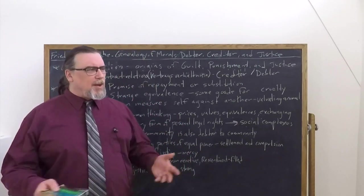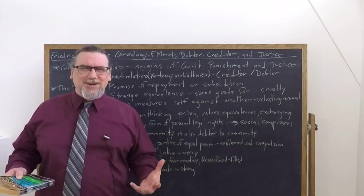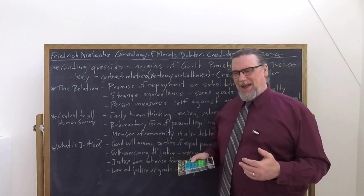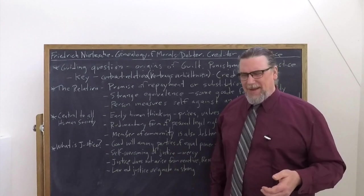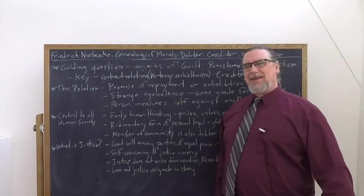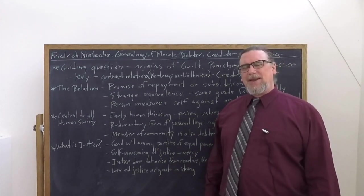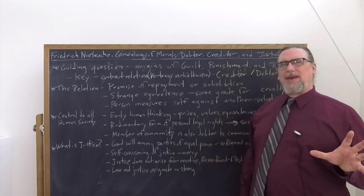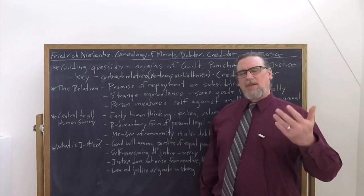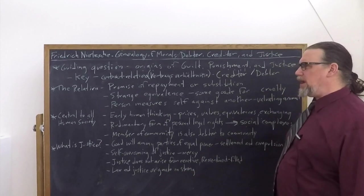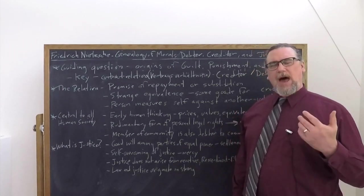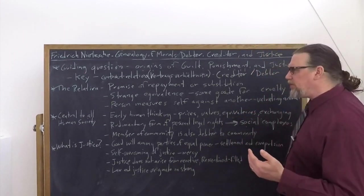And so, like I said, there's a lot that Nietzsche says about that. We're going to skip over this. The main thing here is that there's this measuring going on. To return to our investigation, the feeling of guilt of personal obligation had its origin as we saw in the oldest and most primitive personal relationship, that between buyer and seller, creditor and debtor. It was here that one person first encountered another person, that one person first measured himself against another.